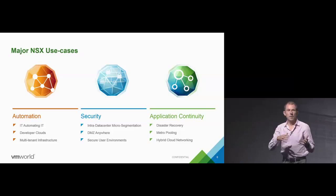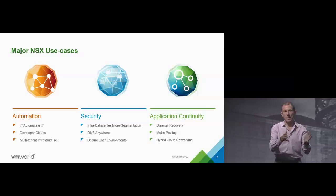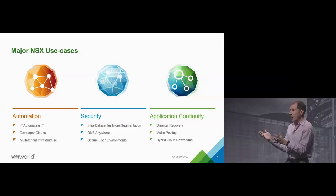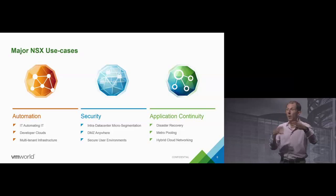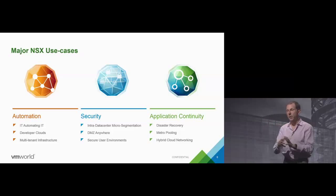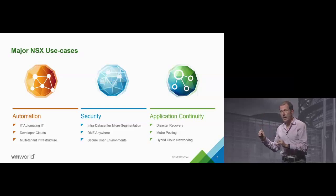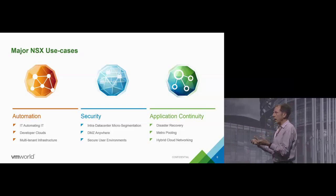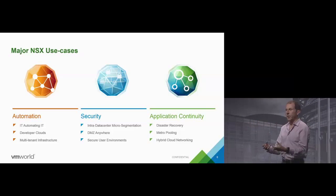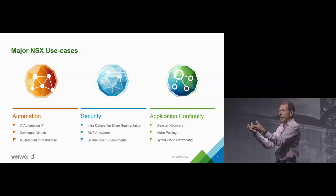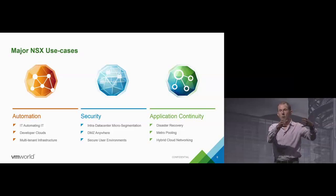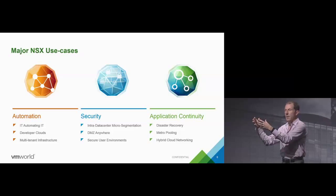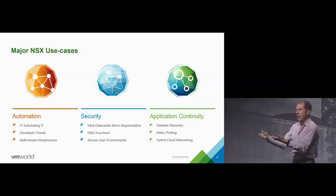That use case was very timely and it leverages some of the same features we built for automation, but also things like the distributed firewall. We went from tens to hundreds of customers largely on the back of that micro-segmentation use case. We're actually finding today that people may start with micro-segmentation and then say, 'Oh, and now I can automate things.' So it's a starter use case for some people. And then finally, application continuity — a fancy word for high availability and disaster recovery — leverages the fact that NSX decouples your network services from the physical infrastructure.